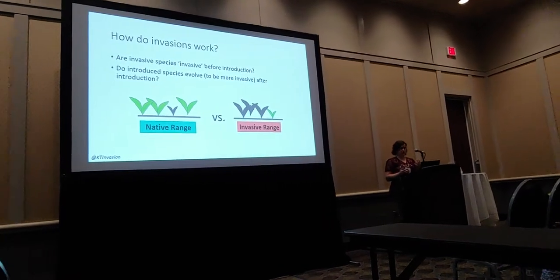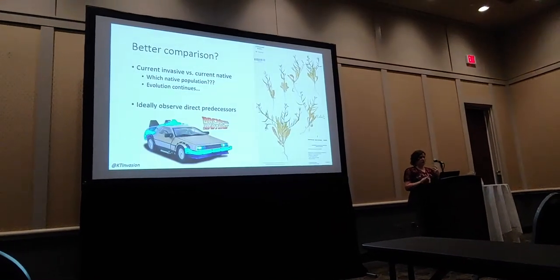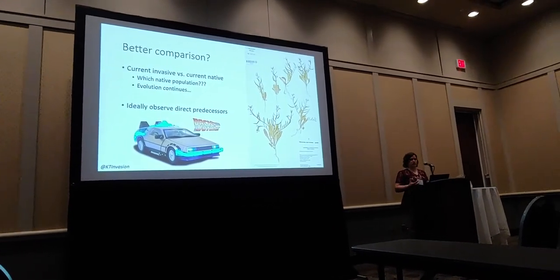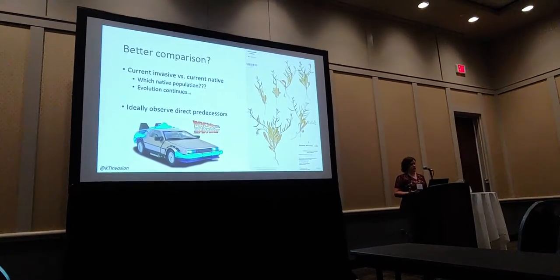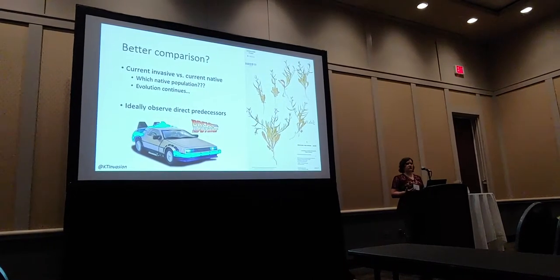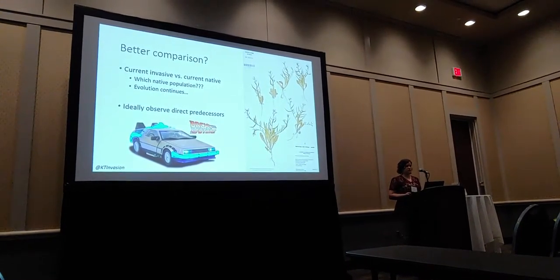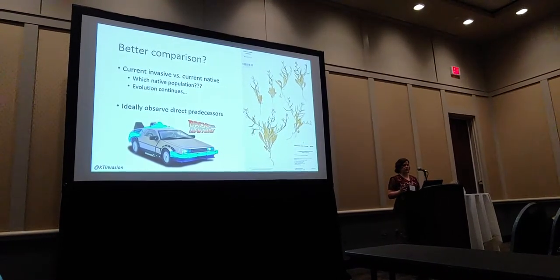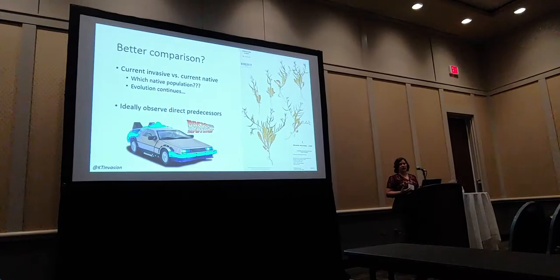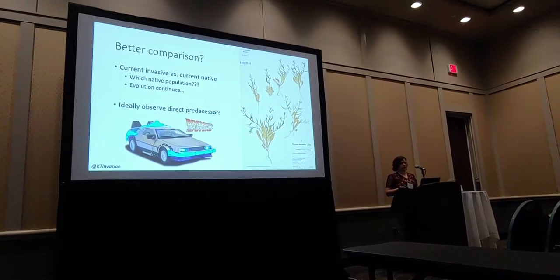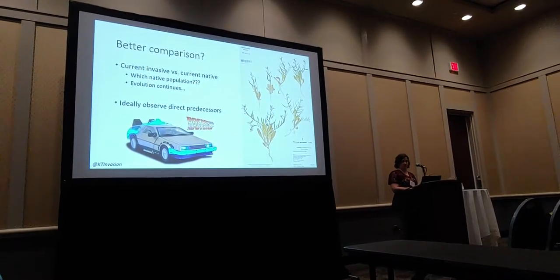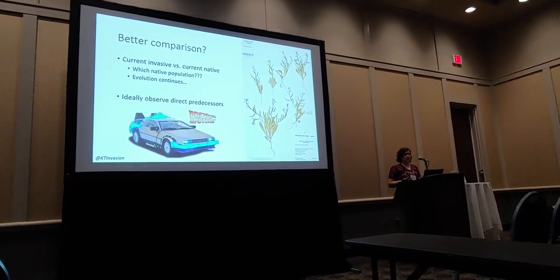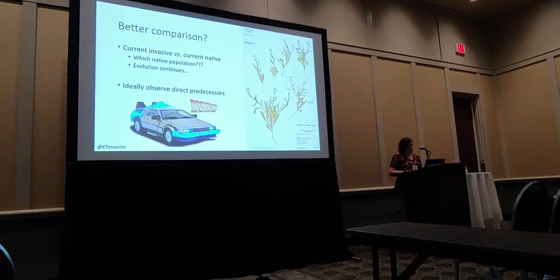I've done this myself in previous work. But I wanted to know if we could perhaps make a better comparison, because there's a problem with comparing contemporary individuals from the two ranges and assuming the difference is the result of evolution in the invasive range. First of all, we have to decide what the correct native population is to even make this comparison. That can be really complicated if multiple introductions are involved — for example, in the invasive brown rat — or if we lack detailed population genetic data, which is typically the case for most species.